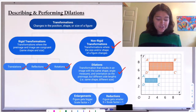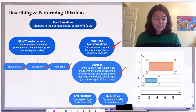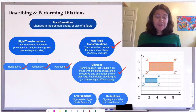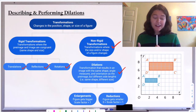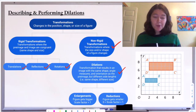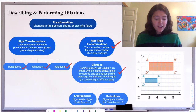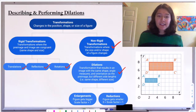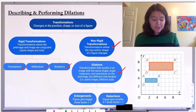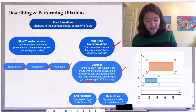Dilations are transformations that result in an image with the same shape — meaning it has the same angles and the same orientation, meaning it's facing the same direction as the pre-image — but different side lengths. So in other words, it's the same shape but a different size.